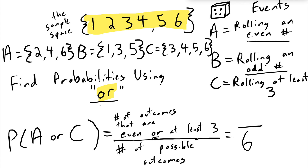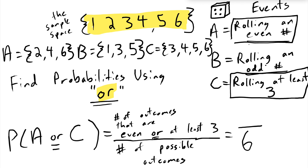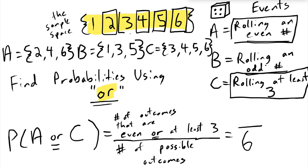Now let's look at probabilities using OR. Instead of AND, we count outcomes that satisfy one or the other criteria. For A or C, we count outcomes that are even OR at least three. The even ones are two, four, and six. Then the ones that are at least three but not already counted are three and five. So we've counted five things. The probability of rolling an even number or rolling at least a three is five out of six.